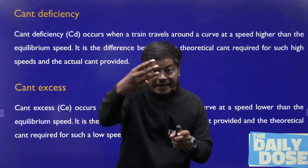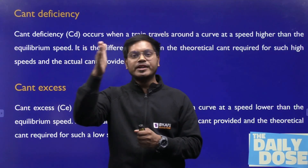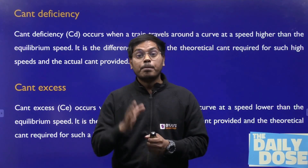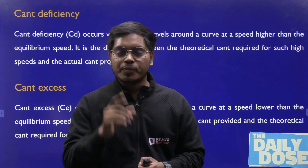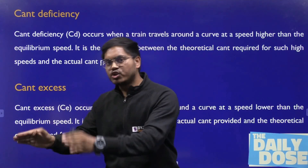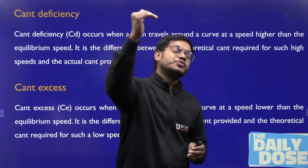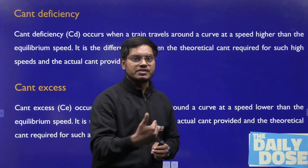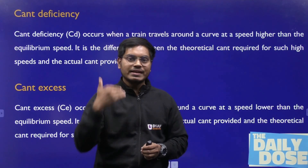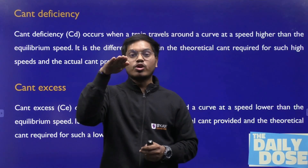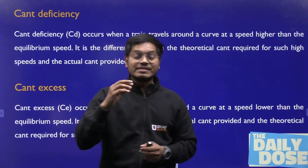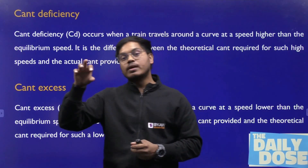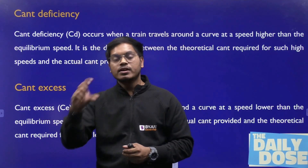There is a third cant which we provide corresponding to the booked speed or minimum speed. Now the train moving with speed more than the equilibrium speed feels the provided cant is less — they feel deficiency. But the train moving with velocity less than the equilibrium speed will feel the cant is more than required — it is in excess. So if you subtract the cant corresponding to booked speed from the actual cant, you will get cant excess.